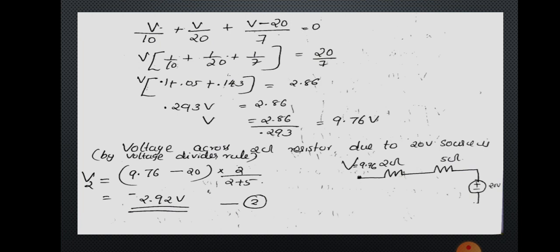By voltage divider rule, voltage across 2 ohm = (9.76 − 20) × 2 / (2 + 5) = −10.24 × 2/7 = −2.92 volts. The voltage value is negative, meaning the polarity is opposite to the assumed direction. The effect of the 20 volt battery gives voltage across 2 ohm as −2.92 volts — marking this as equation 2: V2 = −2.92 volt.